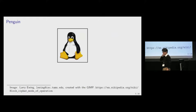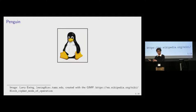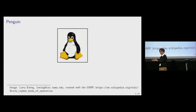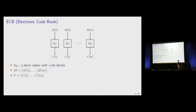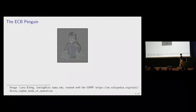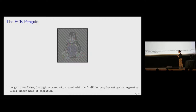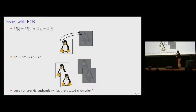This is a penguin — a famous one. Assume that we want to encrypt this image with the ECB mode of a block cipher. We have a block cipher E_K with n-bit blocks; the image is broken into blocks M1 through MM, encrypted individually, and we obtain the ciphertext. The result is the ECB penguin, where we can vaguely see the shape. One issue is that two identical message blocks produce identical ciphertext blocks, which is why the penguin shape is visible.